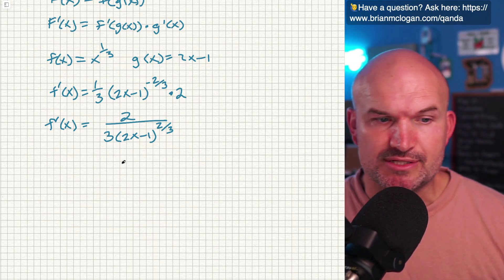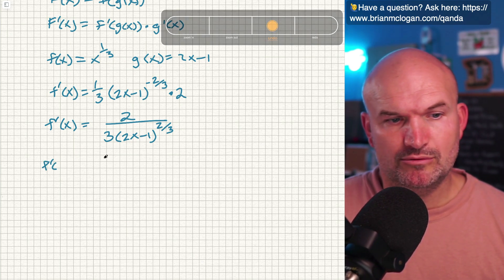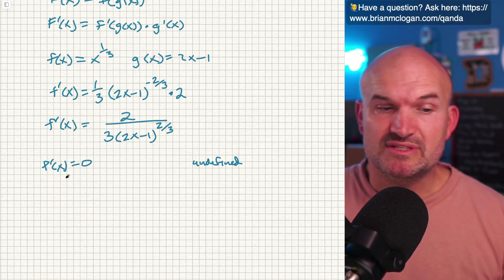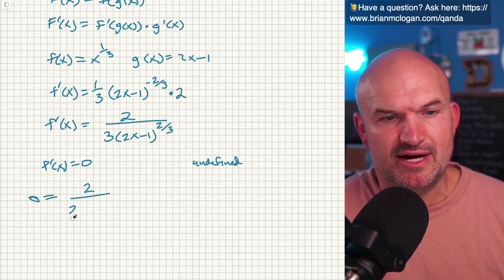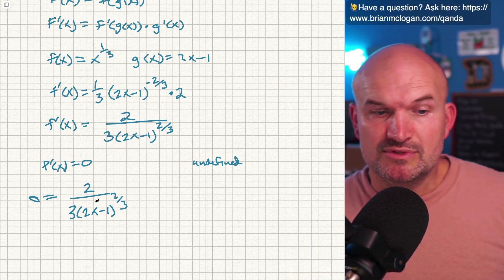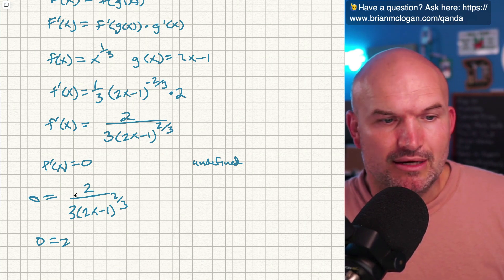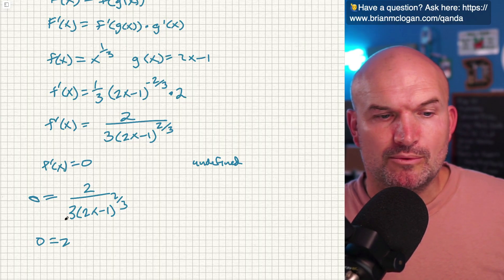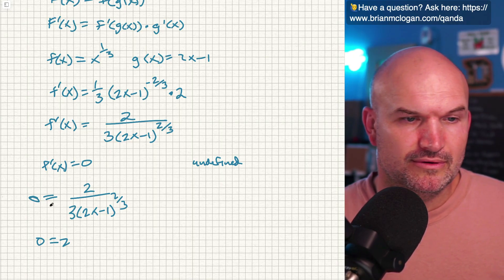Now we need to identify the critical points, which occur when f prime of x equals 0 and when it's undefined. When would f prime equal 0? Setting 0 equal to 2 divided by 3 times (2x minus 1) to the 2/3 — if you multiply both sides by the denominator, you get 0 equals 2. Whenever you have a constant in the numerator, there is no critical point from f prime equal to 0.